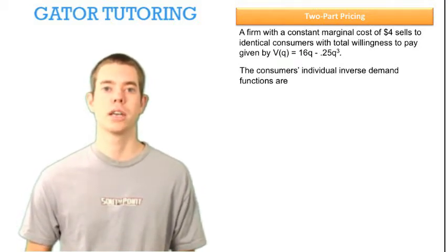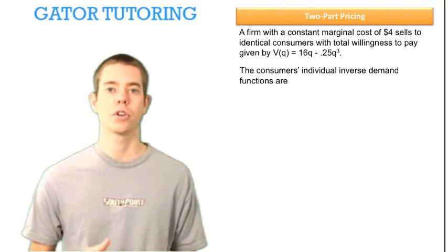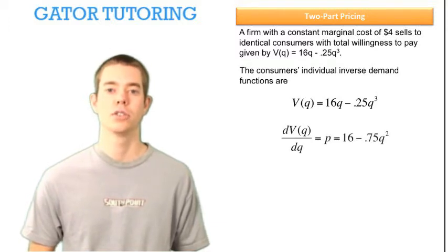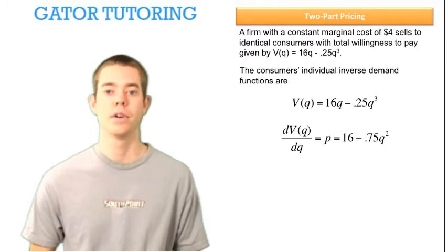Well, the total value function tells us all of the area under the curve, and when we take the derivative of the total value function, we get simply the curve, which is the inverse demand function. So taking the derivative of total value here, we find price to be equal to 16 minus .75q squared.